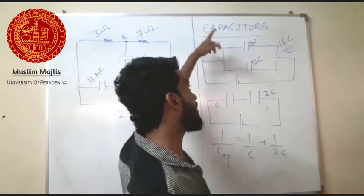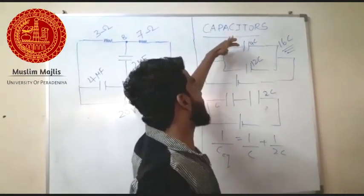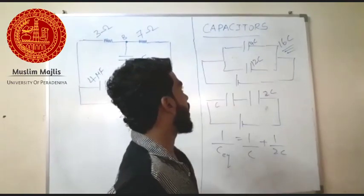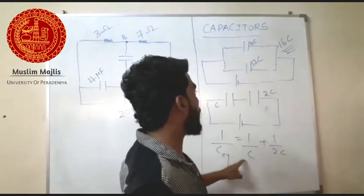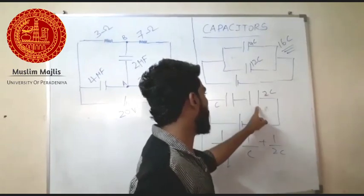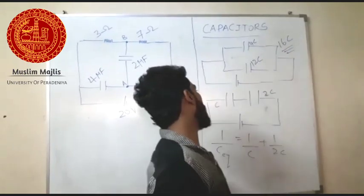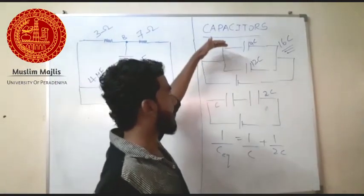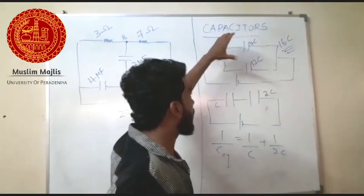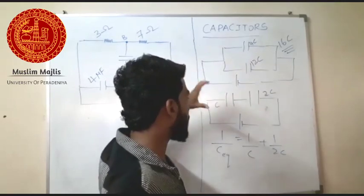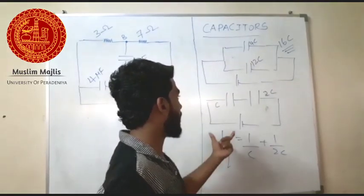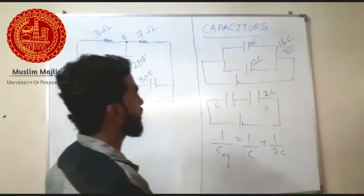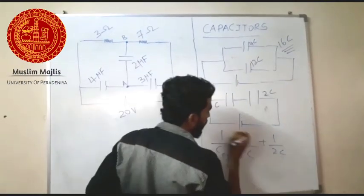This is similar to what we know about resistance. If instead of a capacitor you place a resistance in the circuit, you use the series method for resistance — and the same concept applies. When capacitors are connected in parallel or in series, we can find the resultant capacitance accordingly.